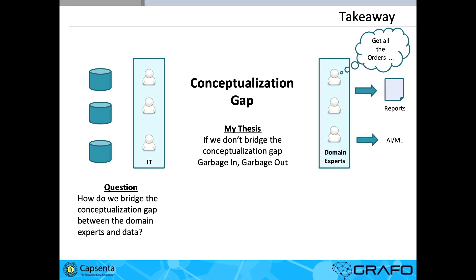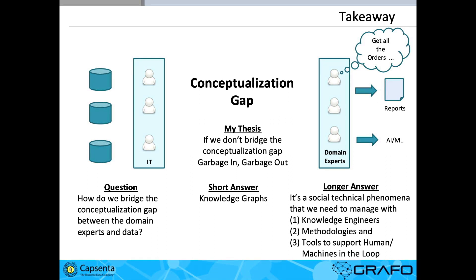The answer is we use a knowledge graph. But the longer answer is that there are three things I want you to take away: we need a knowledge engineer, we need methodologies, and we need tools. We need to understand the relationship between humans and machines in the loop.